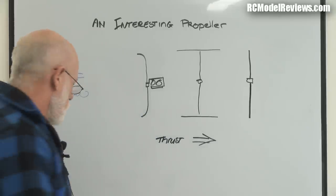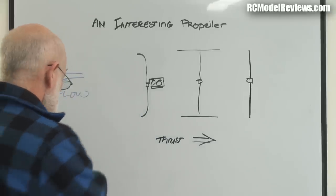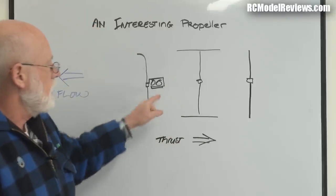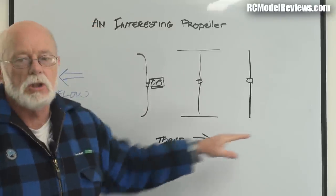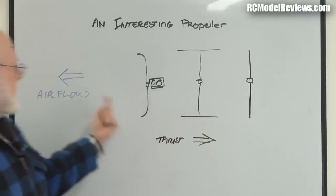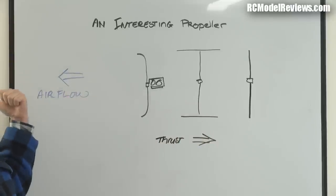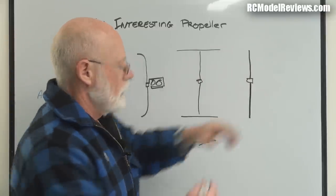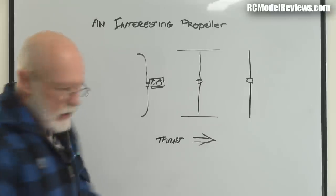I'll show you how this works on the whiteboard here. In a conventional propeller, we've got thrust—this is the motor, these are effectively pusher props. We've got the thrust exerting a force this way, which means the airflow is going to go this way, which means we've got high pressure on this side of the propeller and low pressure on that side.